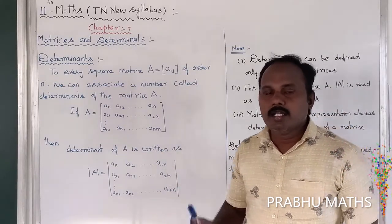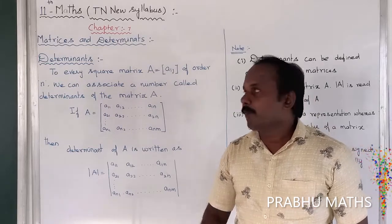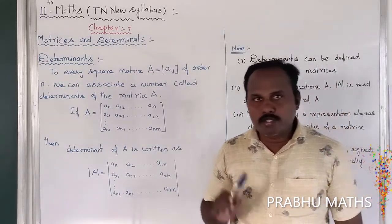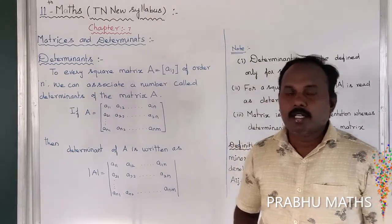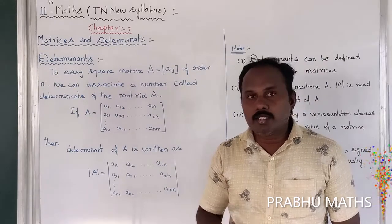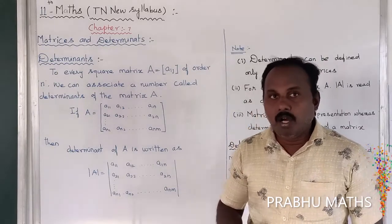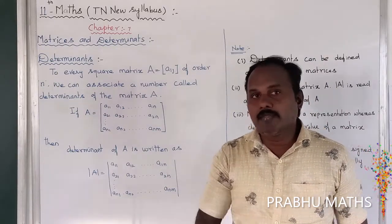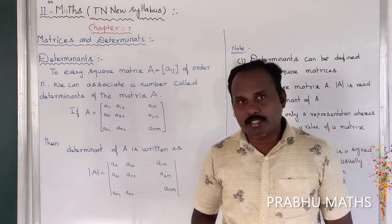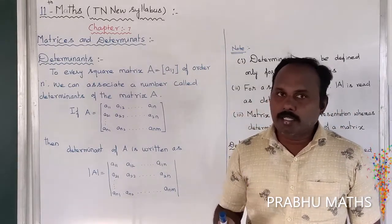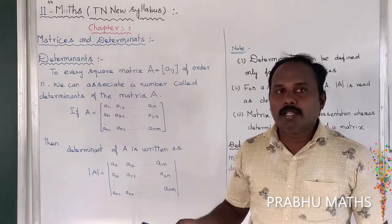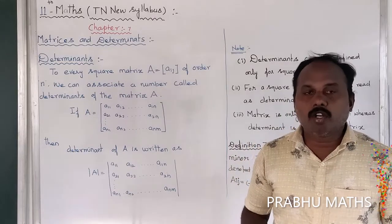The determinant is defined only for a square matrix — 1 by 1, 2 by 2, 3 by 3 matrices. The determinant has all its entries defined, and we can find the value of minors and cofactors for each and every element of the determinant. However, for a general matrix, the determinant is not defined — a matrix is only for operations.